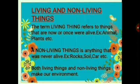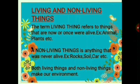Now let's see how different things are classified as living or non-living. The term living things refers to those things that have life in them, or that are now or once were alive — for example, animals, plants, humans, etc. Whereas non-living things are things which do not have life in them or were never alive — for example, rocks, soil, car, etc. All living things are made by nature, but non-living things can be man-made or natural. So both living and non-living things make our environment.